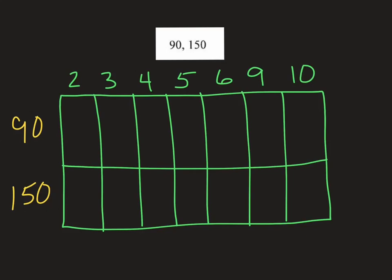For example, both 90 and 150, they're both even numbers, so I would say 2 goes into both of them.